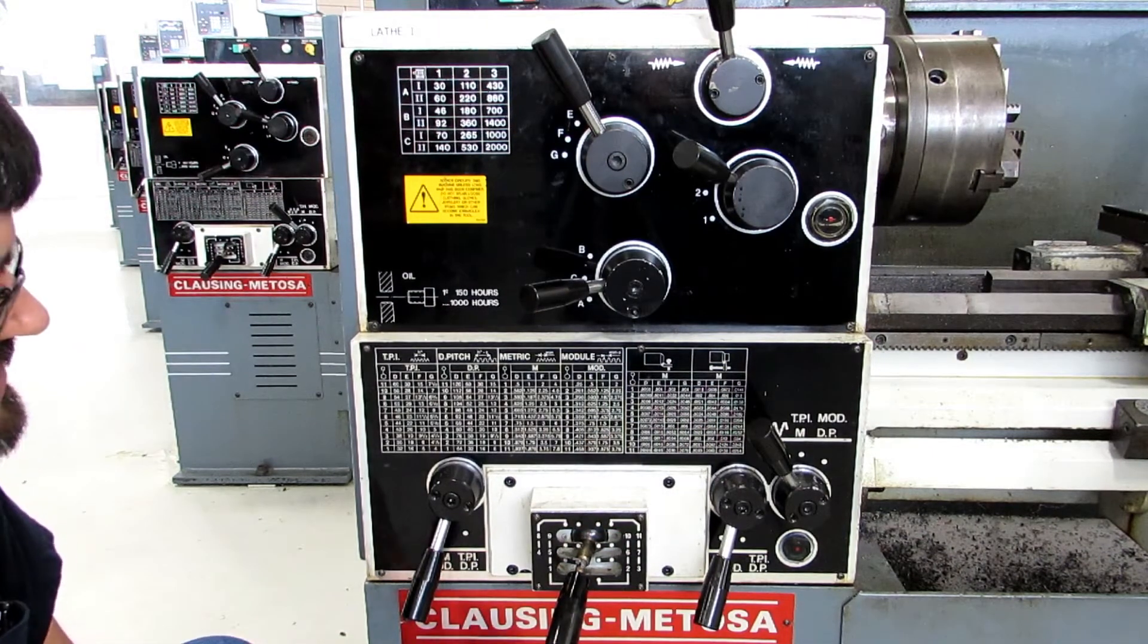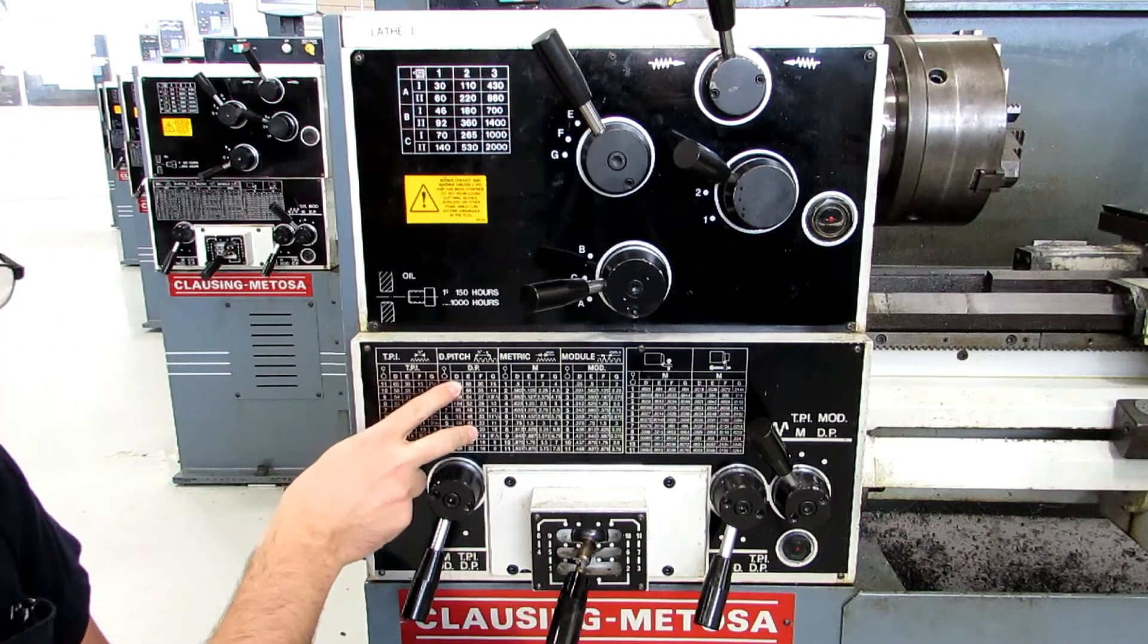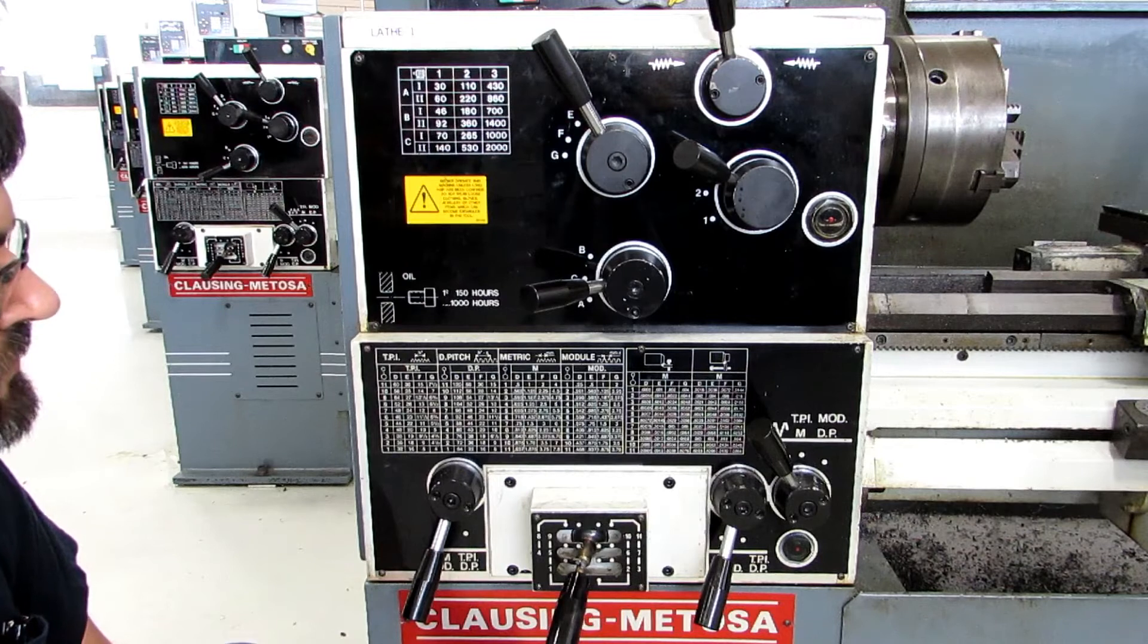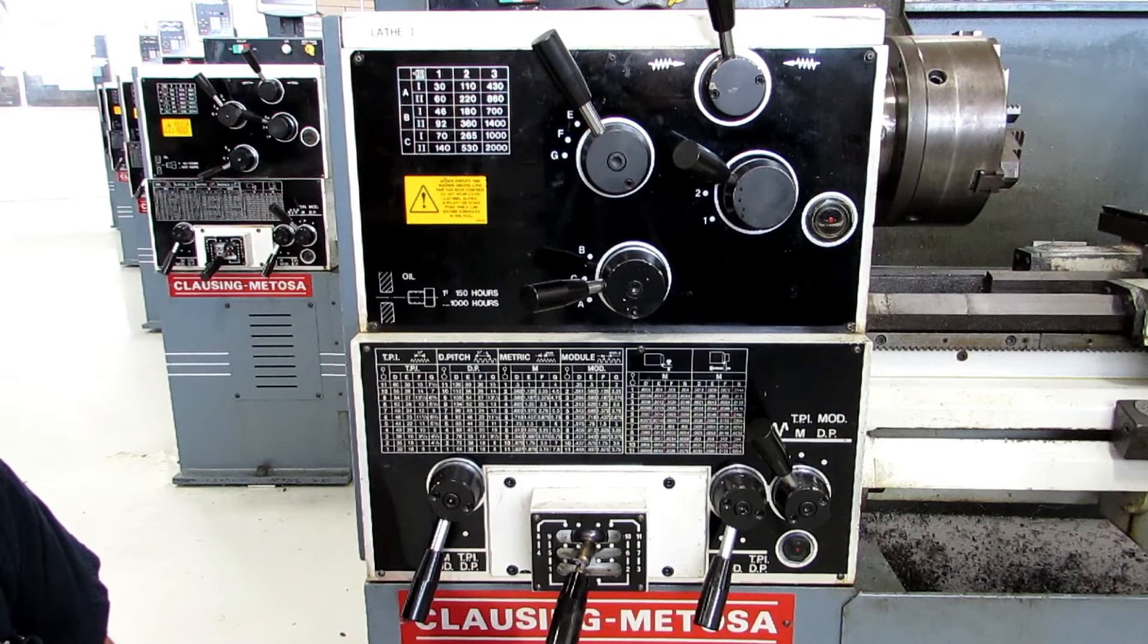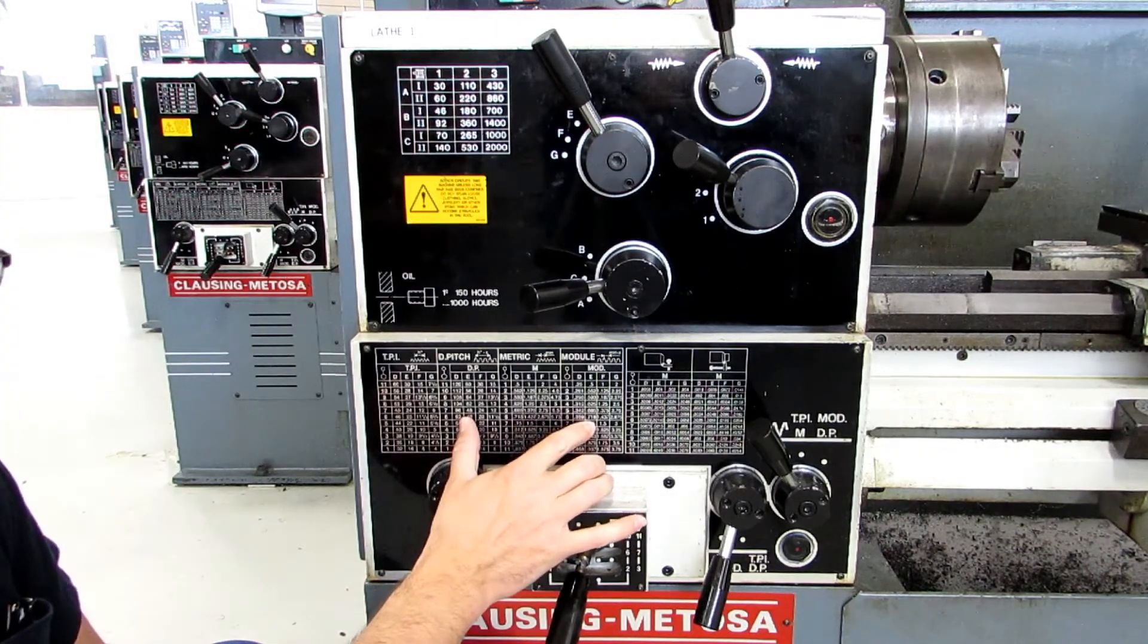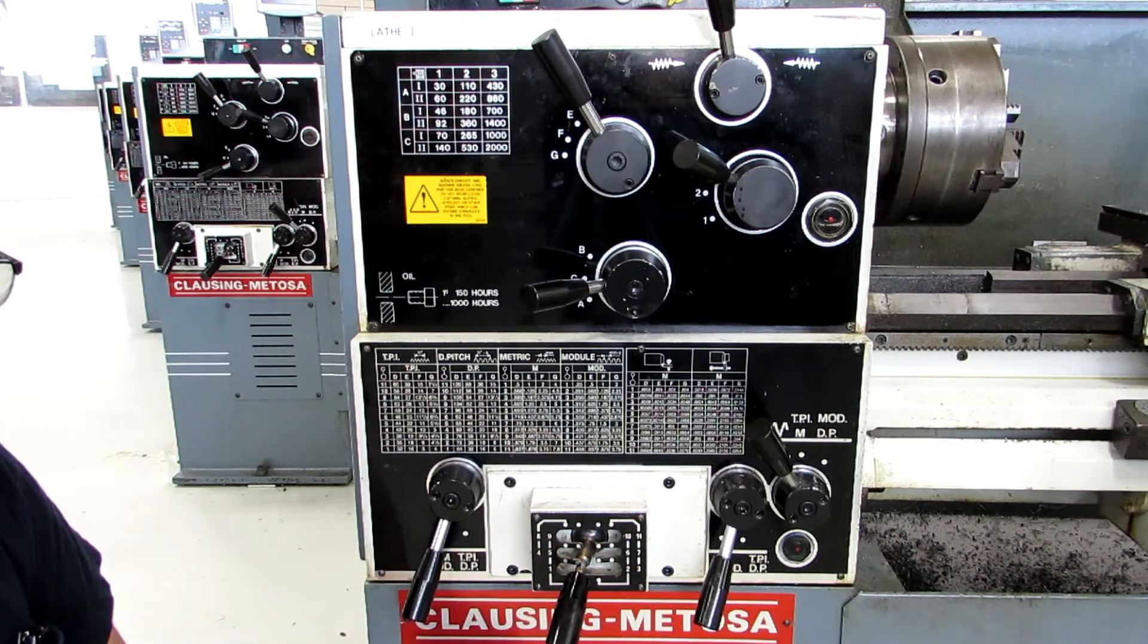The other feed charts that you see here are for threads per inch, diametral pitch, which is a worm if you were cutting a worm gear, then you have metric threads, and then you have module, which is the metric version of diametral pitch. These two you might never use, but threads per inch and metric threads you'll be using pretty often in industry.